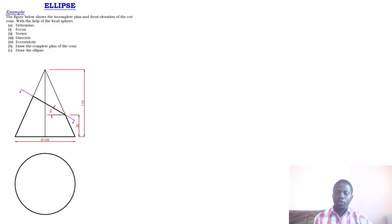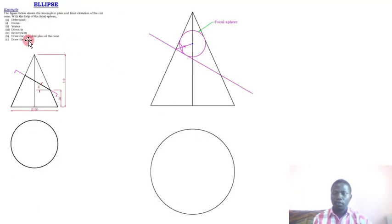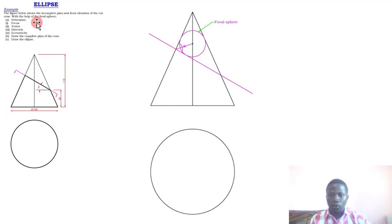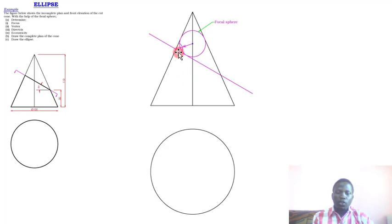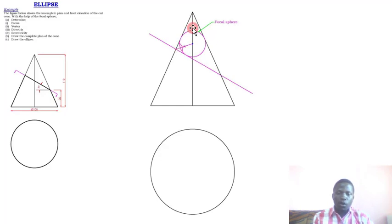Whenever you are dealing with technical drawing, the first thing you do is copy the figure as given. Now let us start with the first case — determining the four items: focus, vertex, directrix, and eccentricity. We have our shape with the sectioning line. Above, you discover there is a triangular shape. What we do is inscribe a circle in that triangular shape.